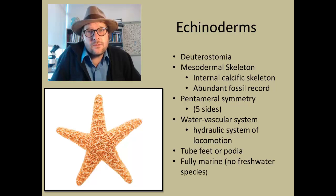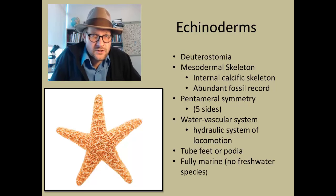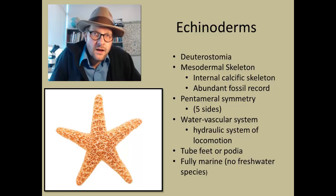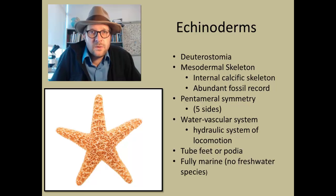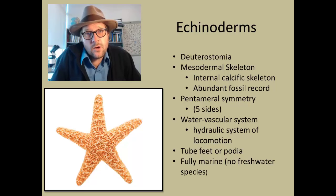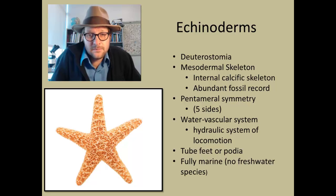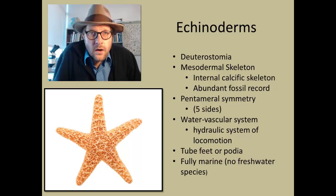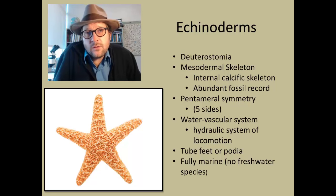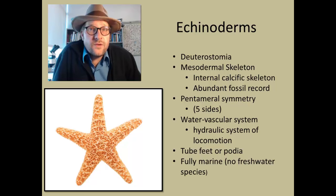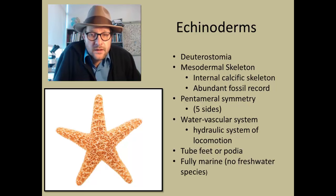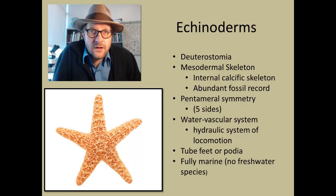As such, echinoderms have never transitioned into fresh waters, and are stenohaline, meaning they are only found in ocean waters with a consistent salinity. The hydraulic water vascular system feeds into a large network of tube feet, or podia, that emerge on the outside of the skeleton through numerous pores.